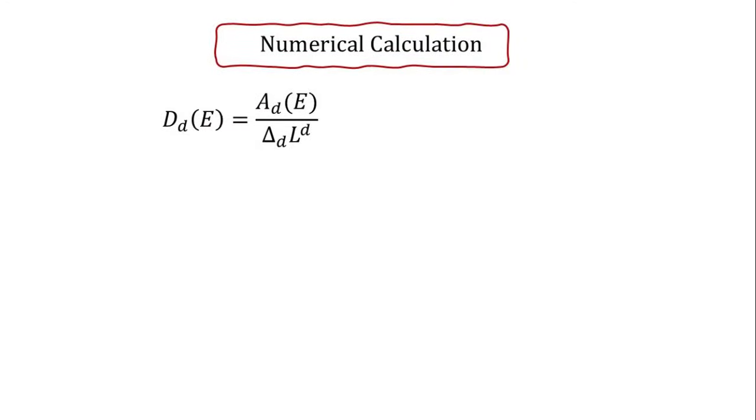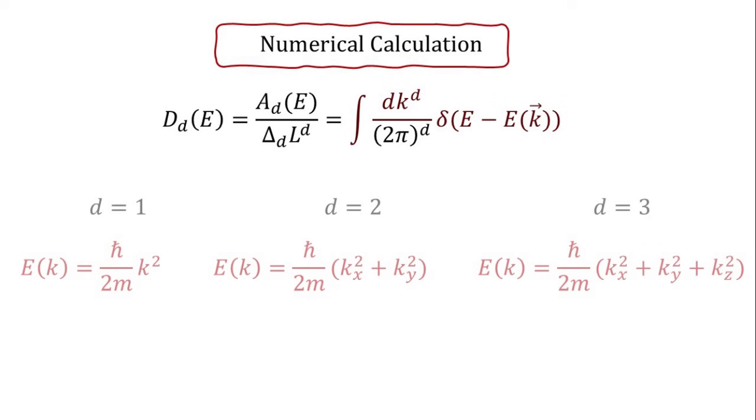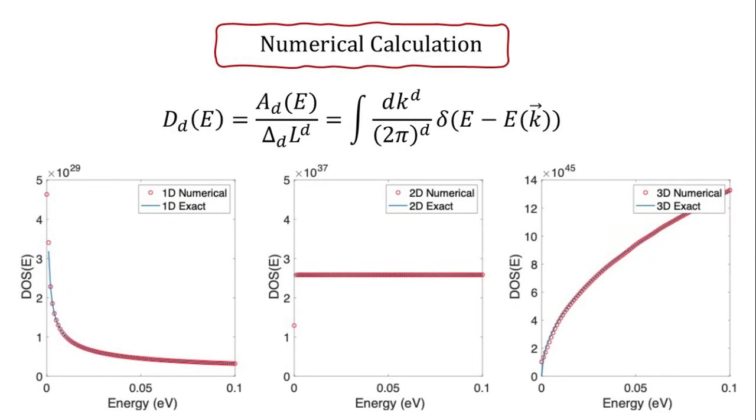To wrap up, let's briefly discuss how the density of states can be computed numerically. The density of states can be interpreted as the area of the ISO energy surface in K-space divided by the discretization volume for each quantum state and further divided by the physical volume. The area of the ISO energy surface in K-space can be expressed using the integral shown here. For numerical implementation, we can discretize K-space and approximate the Dirac delta function with a smooth Lorentzian function. Here we apply this approach to parabolic bands in 1D, 2D, and 3D, for which we've already derived analytical density of states' expressions. The comparison between the numerical and analytical results is displayed, showing excellent agreement. If you'd like a copy of the MATLAB code that performs this numerical calculation, feel free to request it by leaving a comment below.